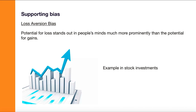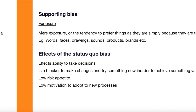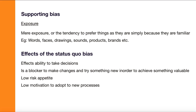There are certain other biases that support the status quo bias. The first is loss aversion bias — the potential for loss stands out in people's minds much more prominently than the potential for gains. In the stock market, people with a lower risk appetite see potential losses very prominently, while people with a higher risk appetite focus more on gains. People with low risk appetite can be said to have this loss aversion bias.